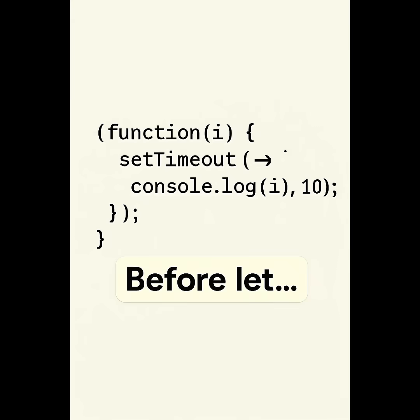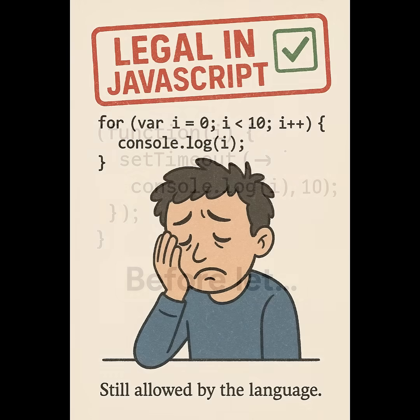Before let, we used an IIFE. It created a new scope for each loop. Var in loops is one of the most confusing bugs — and yes, it's 100% legal in JavaScript.